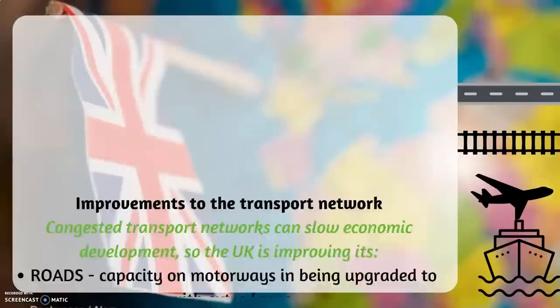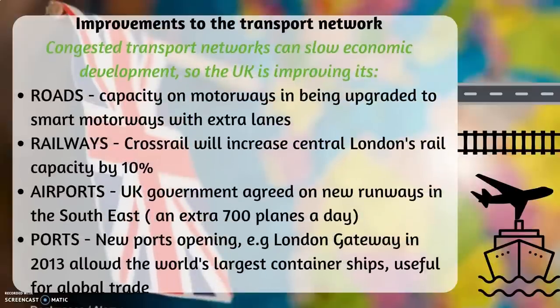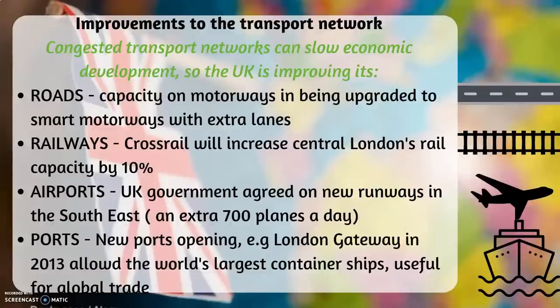Improvements to the transport network. Congested transport networks can slow economic development. The UK is improving its roads by increasing capacity on motorways to smart motorways with extra lanes. Railways: the Crossrail project will increase central London's rail capacity by 10%. Airports: the UK government has agreed to create new runways in the southeast, such as Heathrow. Ports: London Gateway, opening in 2013, allowed the world's largest container ships, useful for global trade.